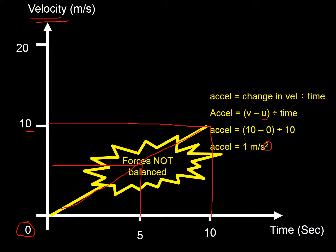The forces are definitely not balanced here — the object is getting faster, which means the forces are unbalanced. The forwards force must be bigger than the drag force.